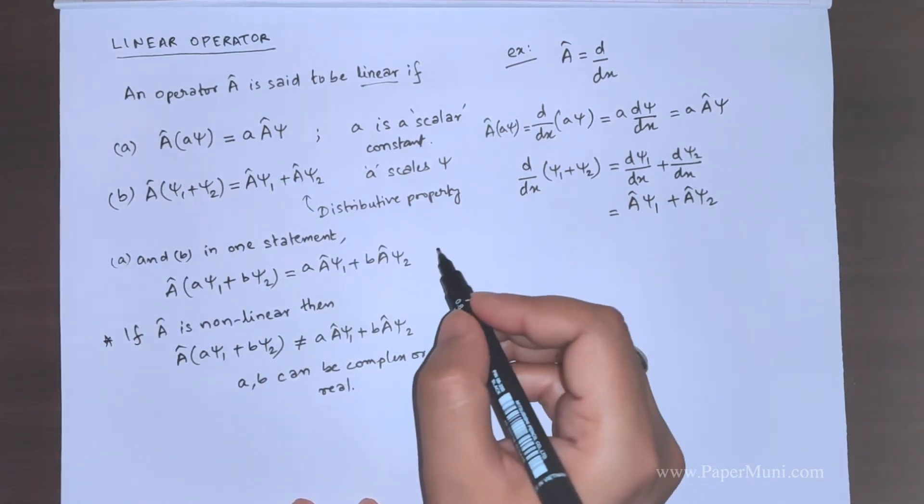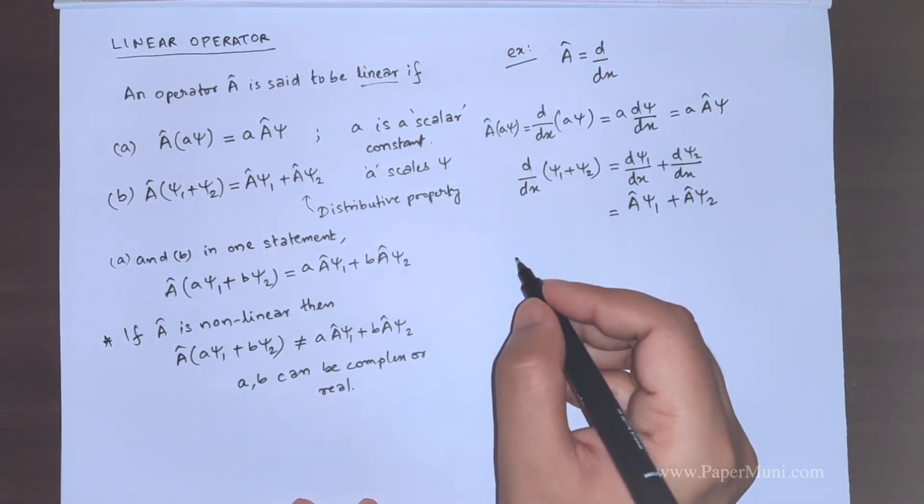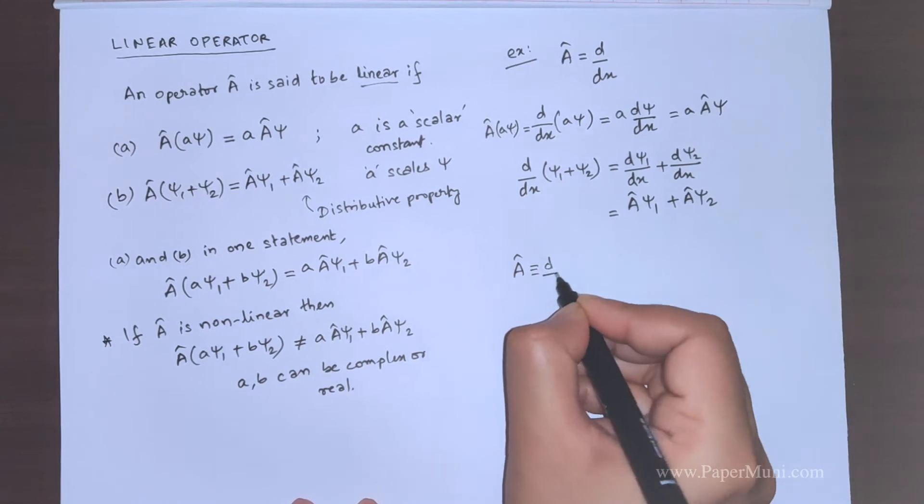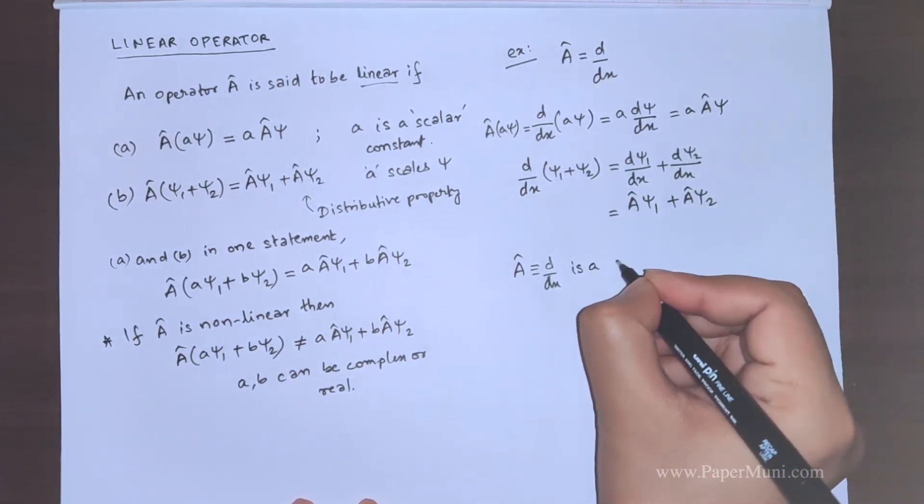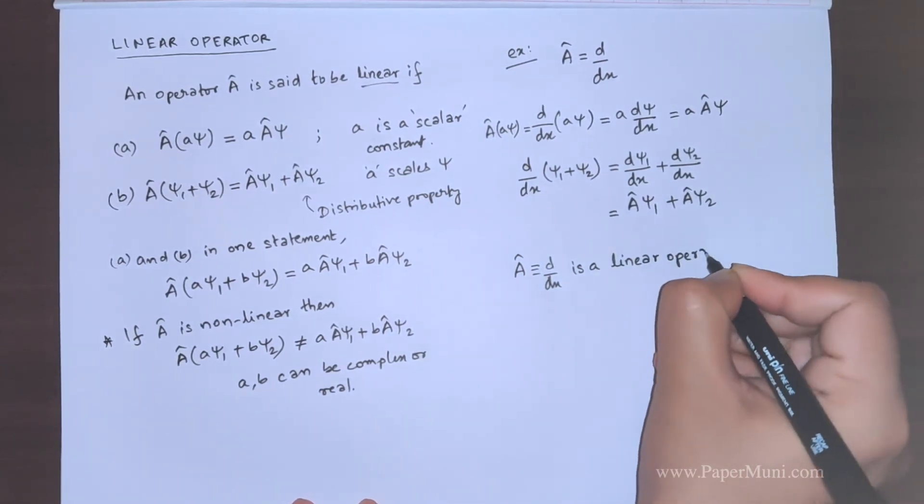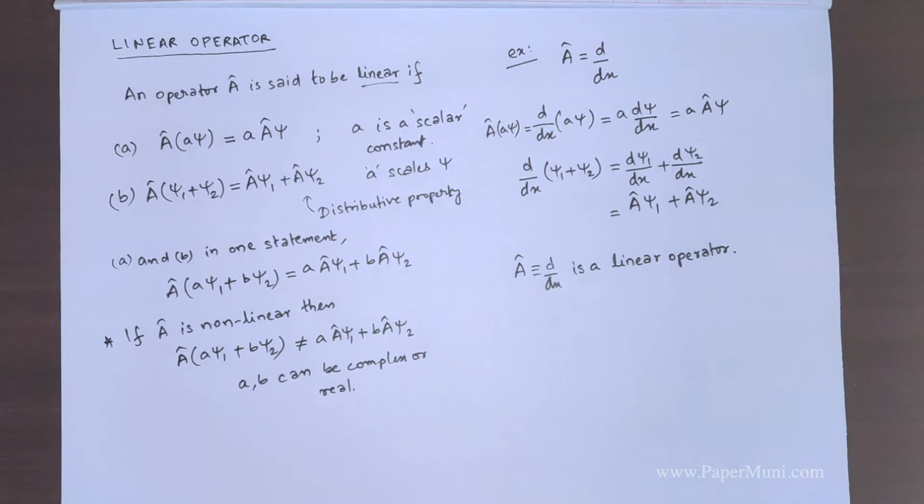Linearity can be checked by this format, this condition. So, we can conclude that A which is given by d dx is a linear operator. Now, we can take an example where we can say that whether we will just pick up another operator and let's check whether it is a linear operator or not.